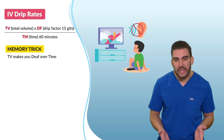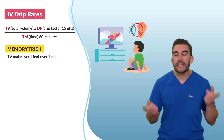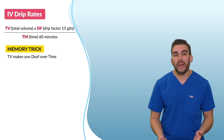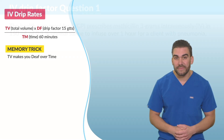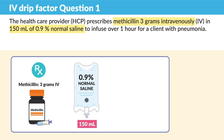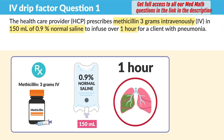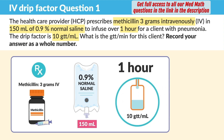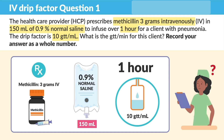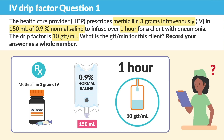Because my mom always used to tell me, stop sitting so close to the TV, it's going to make you deaf over time. Now let's review five example questions for drip rates that you could see on your exit exam. The HCP prescribes methylpenicillin 3 grams IV in 150 mLs of 0.9% normal saline to be infused over one hour for a client with pneumonia. The drip factor is 10 drops per mL. What is the drips per minute for this client? Anytime you see GTT, you're thinking drips, and we're always recording the answer as a whole number because you can't give half of a drop.